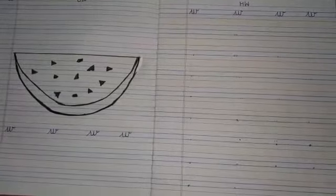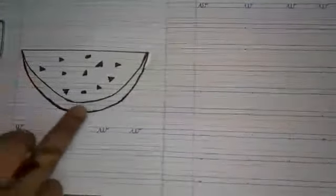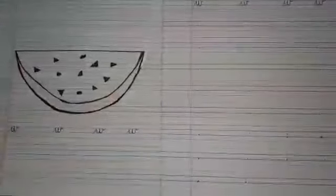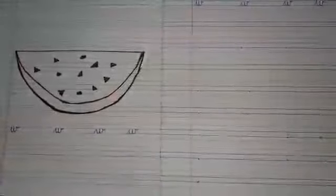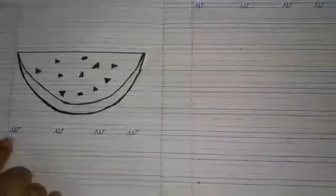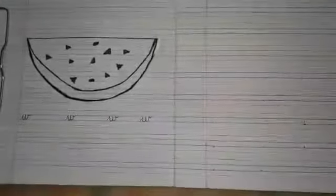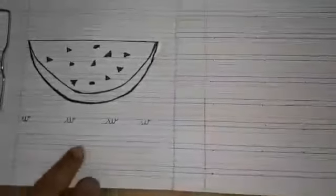Today, we will be writing the letter in our red and blue line book. Can you name the object that I have drawn? Yes, it's a watermelon. As you can see, I have written the letter on the first line and I have put dots on the remaining lines.